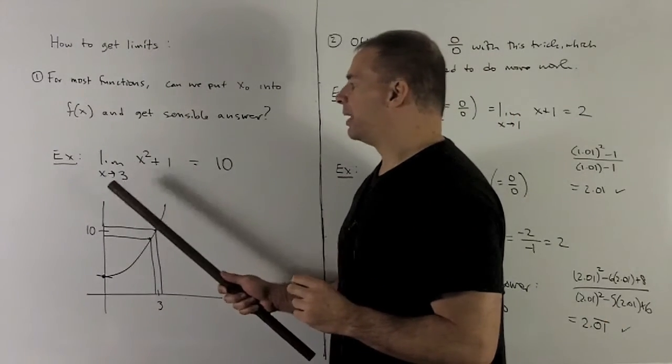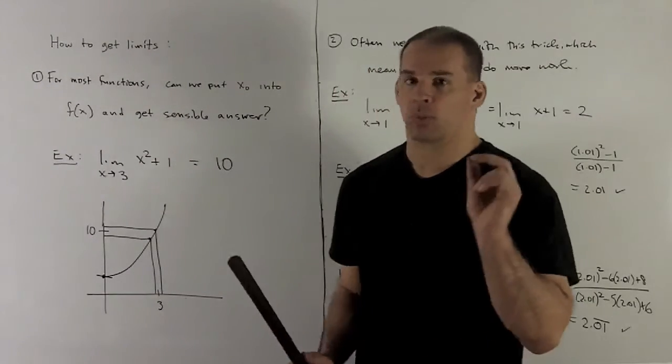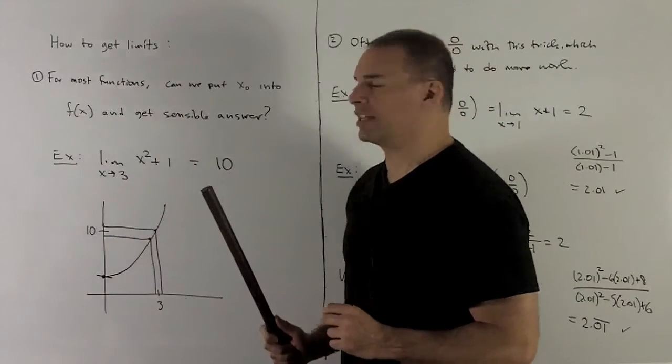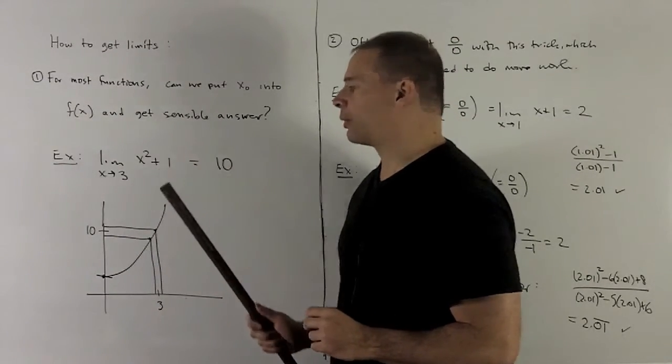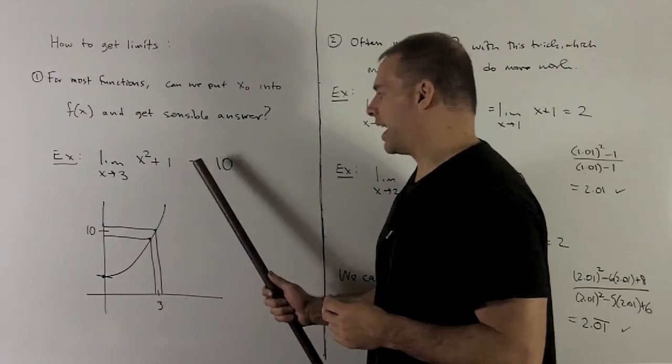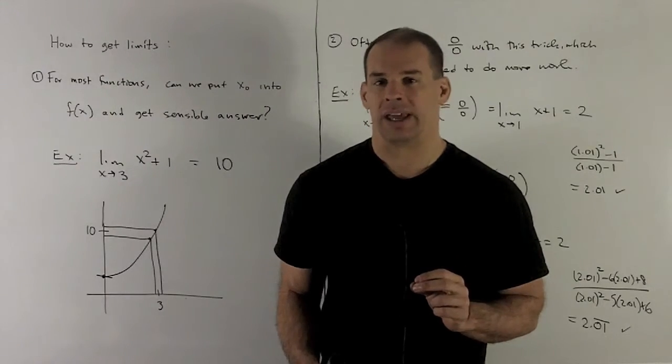So here's an example. I'm going to take the limit as x goes to 3, x² + 1. So the rule is just going to be, I take my 3. Just putting 3 into this function makes sense. Well, I'm going to get 3², which is 9 plus 1. 10 comes out, so I'll call 10 the limit. We'll make this a little bit more concrete later on.